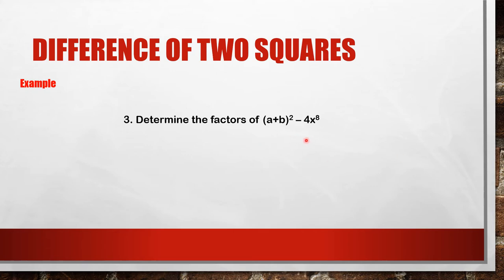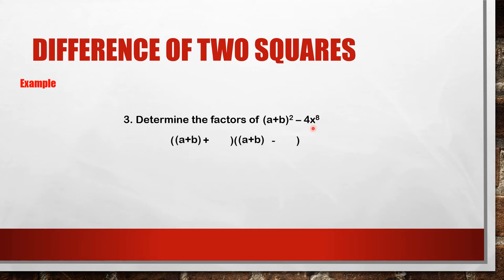Another example: the expression (a plus b) quantity squared minus 4x to the power of 8. This is still a difference of two squares because (a plus b) squared is a complete square, and 4x to the power of 8 is also a complete square. The square root of (a plus b) squared is just a plus b, and the square root of 4x to the power of 8 is 2x to the fourth. So the factors are (a plus b plus 2x to the fourth) times (a plus b minus 2x to the fourth).